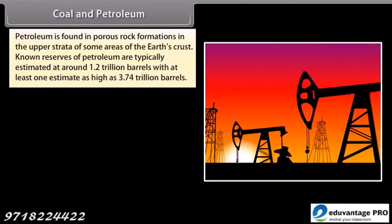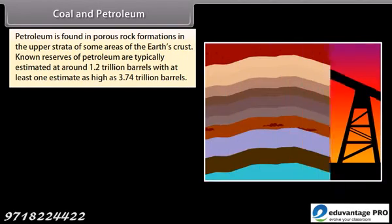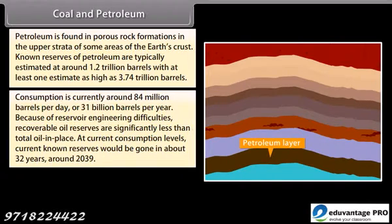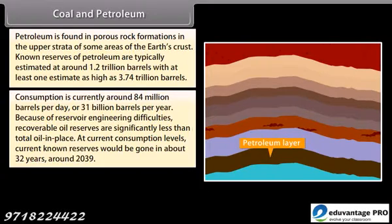Petroleum is found in porous rock formations in the upper strata of some areas of the earth's crust. Known reserves of petroleum are typically estimated at around 1.2 trillion barrels, with at least one estimate as high as 3.74 trillion barrels. Consumption is currently around 84 million barrels per day or 31 billion barrels per year. Because of reservoir engineering difficulties, recoverable oil reserves are significantly less than total oil in place. At current consumption levels, known reserves would be gone in about 32 years, around 2039.